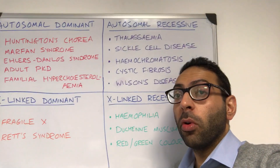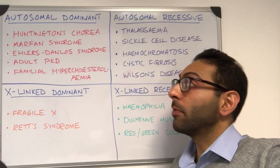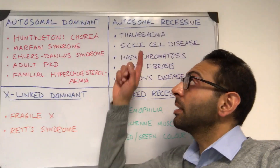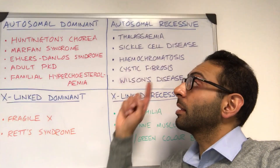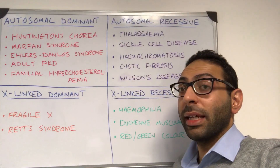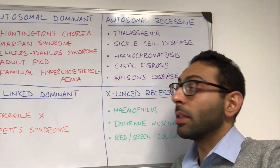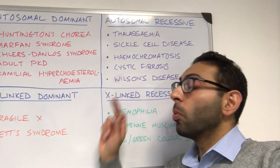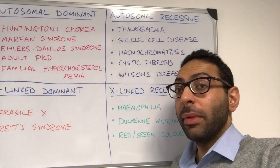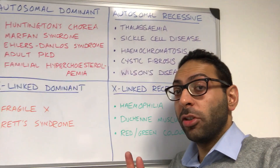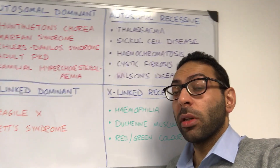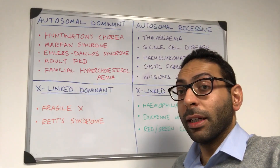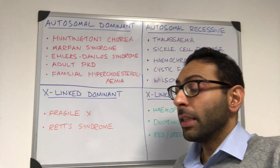Then you have autosomal recessive — things like thalassemia, things like sickle cell disease, things like hemochromatosis, cystic fibrosis, Wilson's disease. Remember, you need two affected genes in an autosomal recessive condition in order to have the condition.